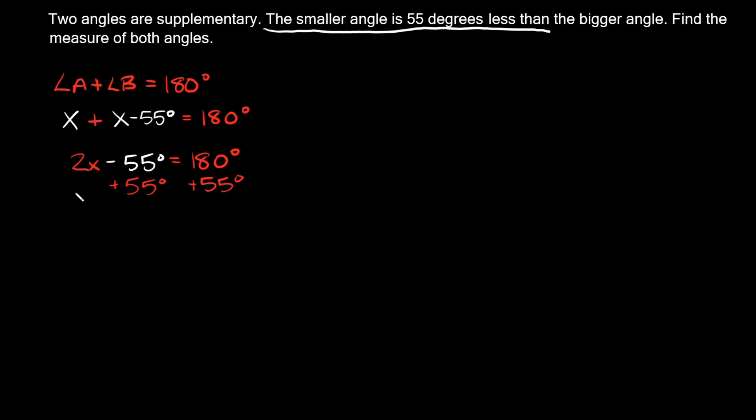Now simplifying some stuff, 2X I still have just the 2X, and then negative 55 degrees plus 55 degrees that cancels out and just goes to 0. So then this is gonna be equal to 180 plus 55. So 180 plus 55 is equal to 235 degrees.